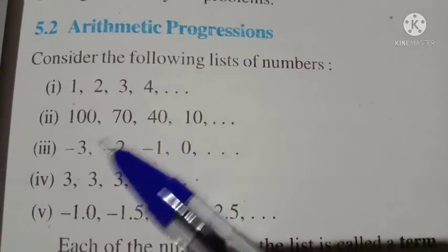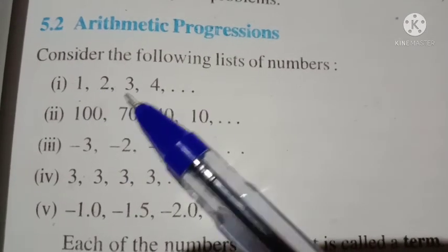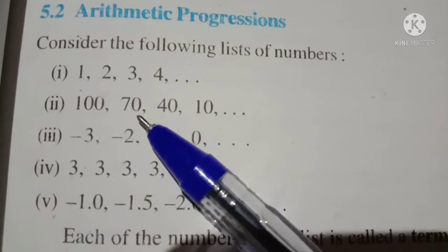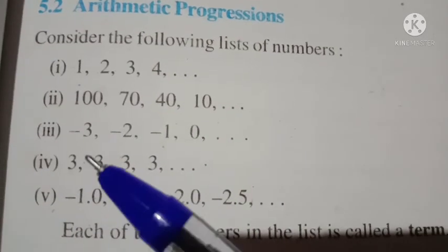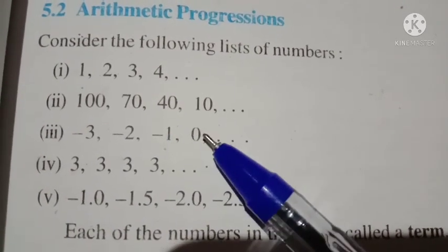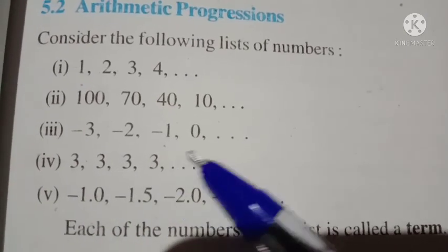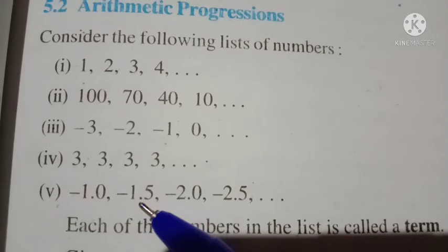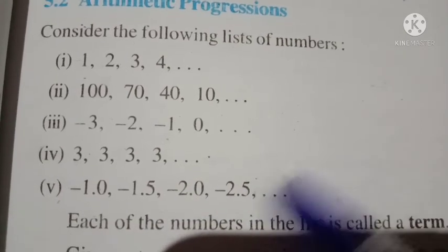Now look at these lists of numbers: 1, 2, 3, 4, etc.; 100, 70, 40, 10, etc.; minus 3, minus 2, minus 1, 0, etc.; 3, 3, 3, 3, etc.; and negative 1, negative 1.5, negative 2, negative 2.5, etc. In the first list, we add 1 each time. In the second list, we add minus 30 each time — so 100 plus minus 30 gives 70, then 70 plus minus 30 gives 40, and so on.